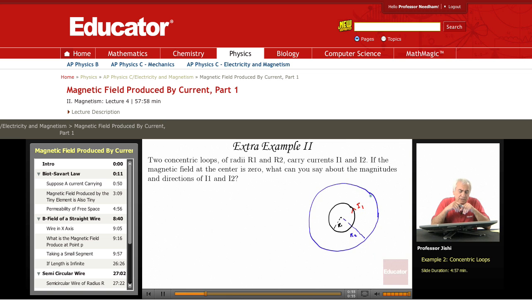Now, we're told that the magnetic field at the center is zero. What can you say about the magnitudes and directions of I1 and I2?